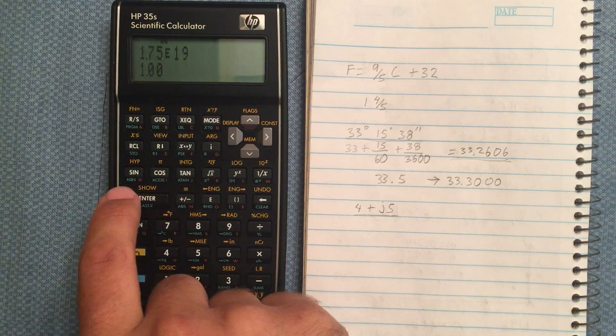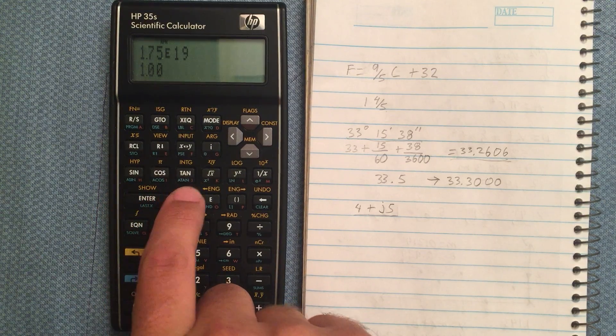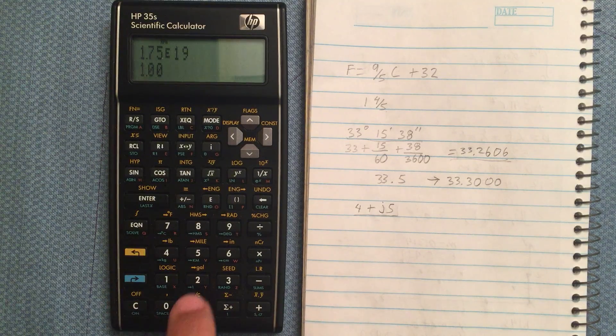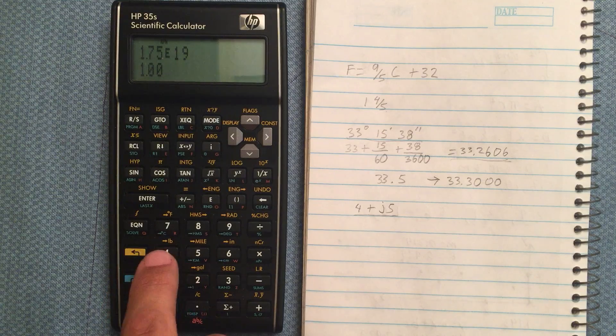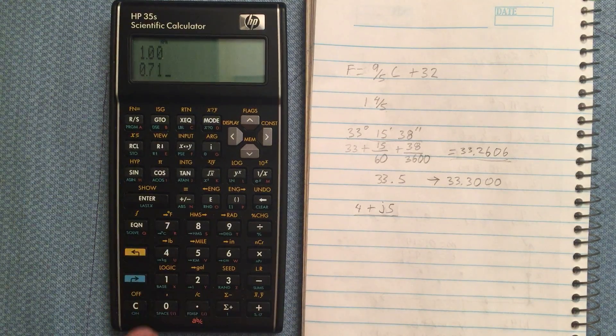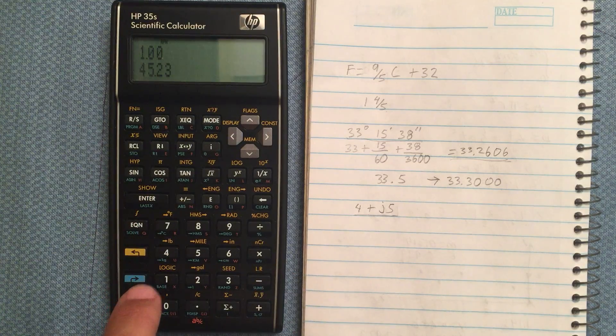The anti-sine, anti-cosine, and anti-tangent are located under the blue shift. So 0.71, anti-sine, should be close to 45.